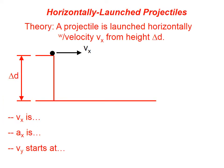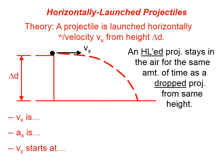Let's talk about horizontally launched projectiles. We're going to take a projectile and launch it horizontally with velocity v sub x from a height delta d. It would, of course, take a curved path. It wouldn't fall straight and make like the hypotenuse of a triangle — it would fall in some curved path like that. A horizontally launched projectile stays in the air for the same amount of time as a dropped projectile from the same height.